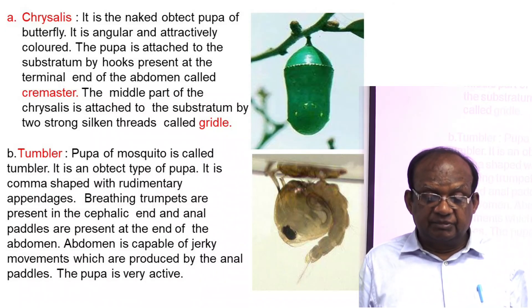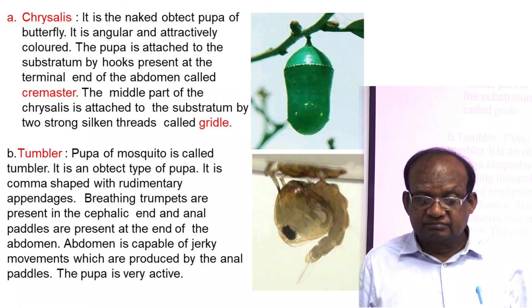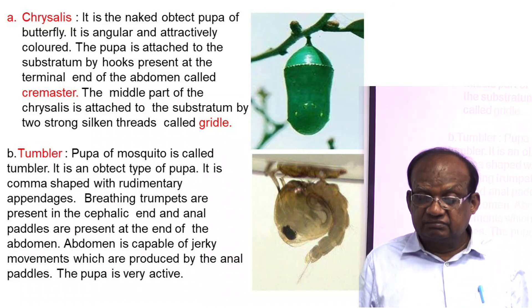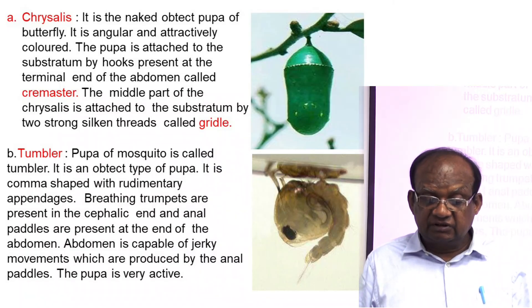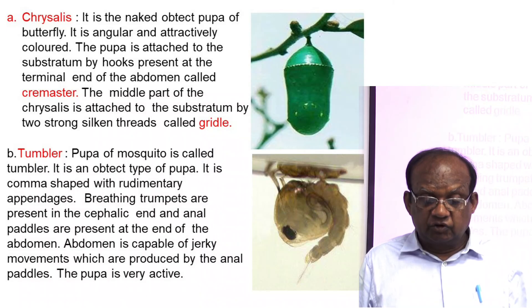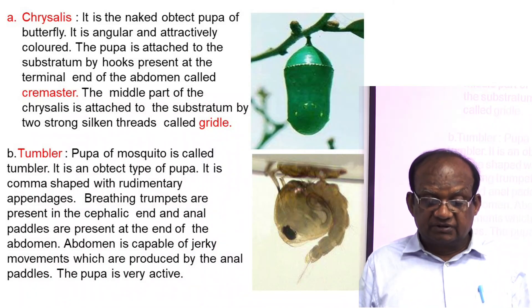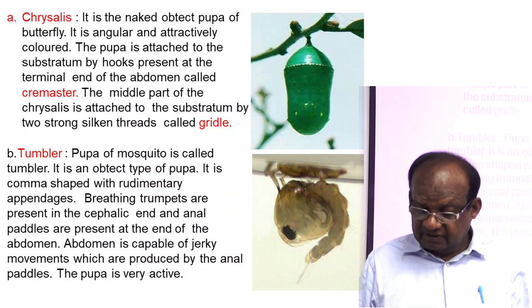The tumbler pupa of mosquitoes is also an obtect type of pupa. It is comma-shaped, as shown in the diagram. Rudimentary breathing trumpets are present at the cephalic end, and the abdomen is capable of jerky movements produced by caudal paddles. The pupa is very active in the case of tumbler pupa.